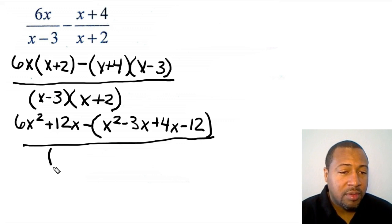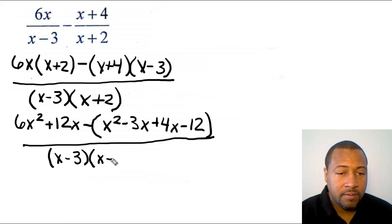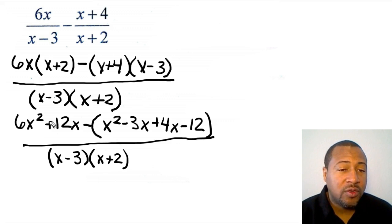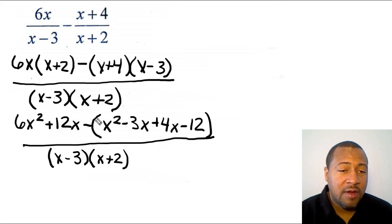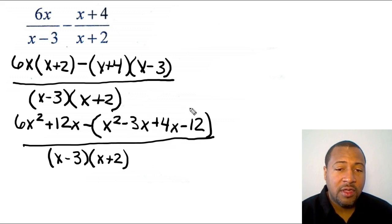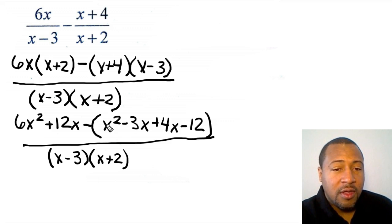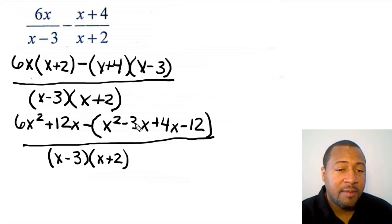I bring down the common denominator. I put the FOIL result in parentheses because there's a negative sign in front of it, and I need to distribute that negative to every single one of those terms. First I'll combine like terms inside the parentheses.